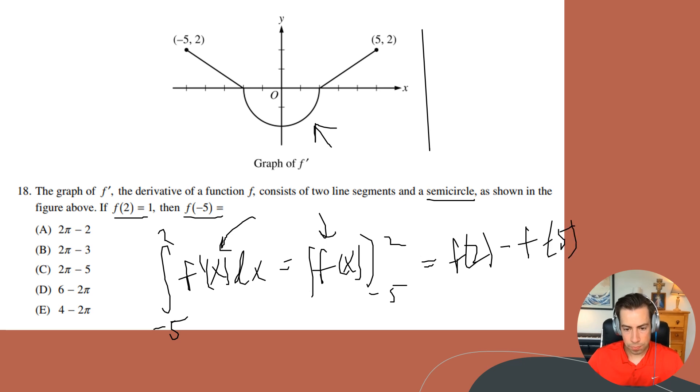minus f of negative five. And then I know that f of two is equal to one because it tells us right there, so this is going to be equal to one minus f of negative five. Now the interesting thing